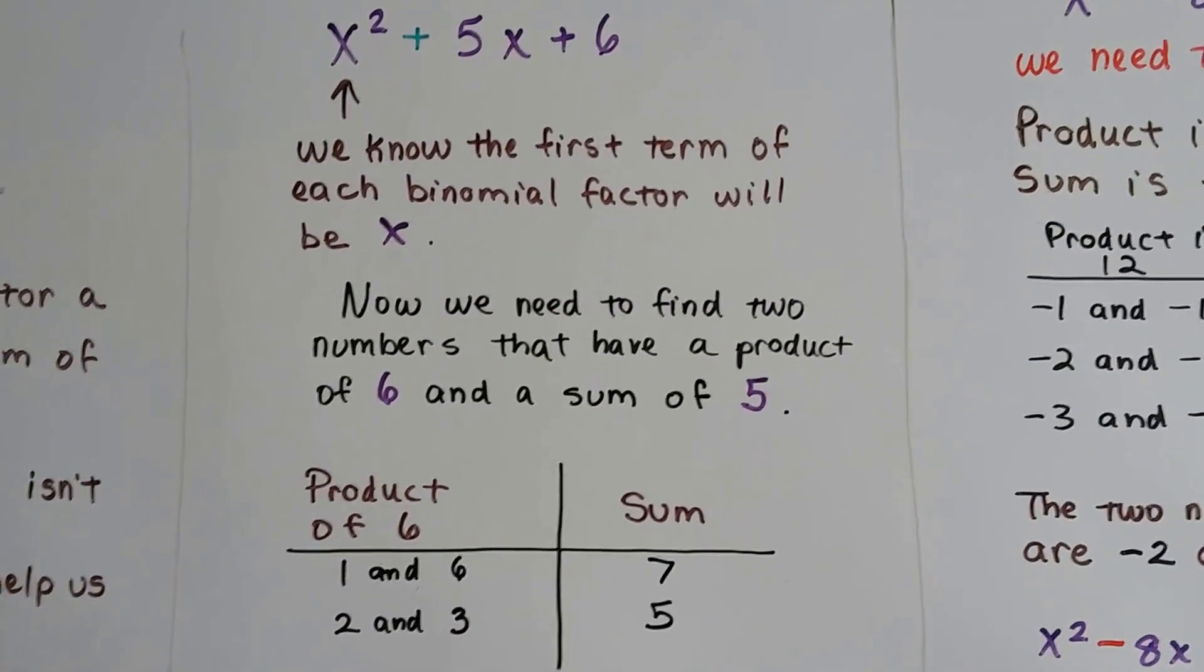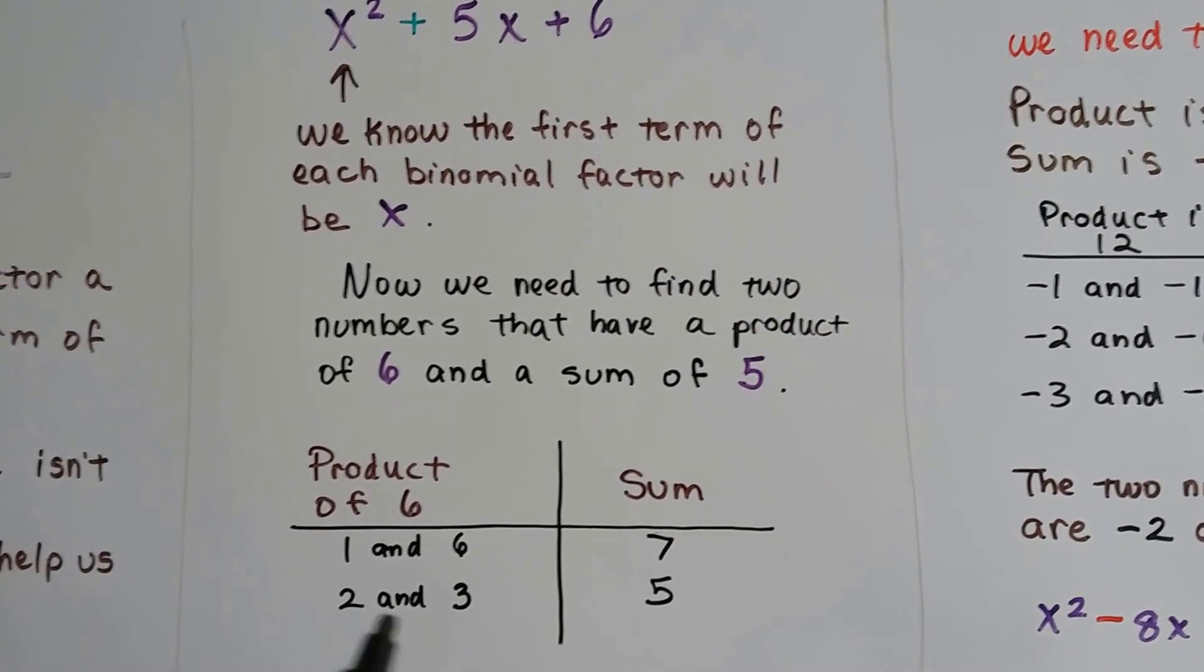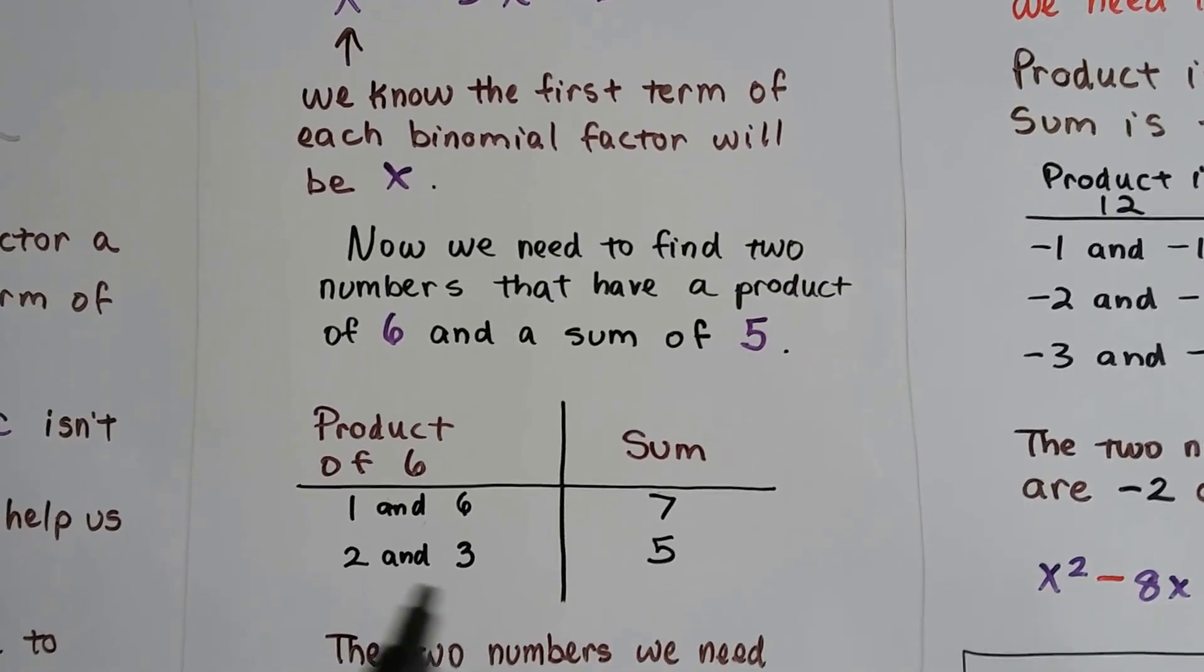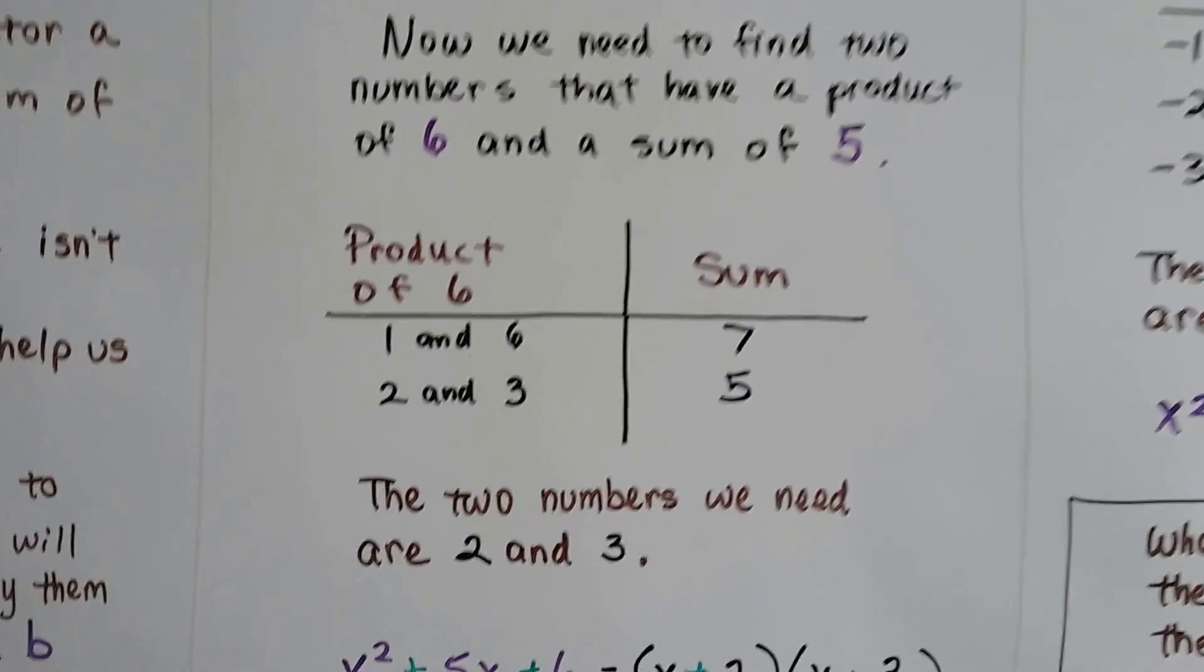So that's not a 5, that's not going to work. But 2 times 3 is 6, and 2 plus 3 is 5, so we know our two numbers are 2 and 3.